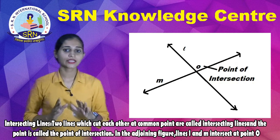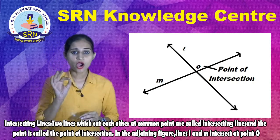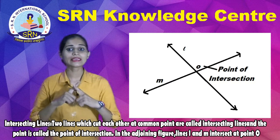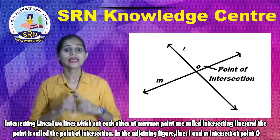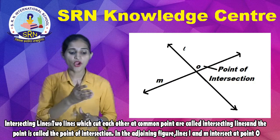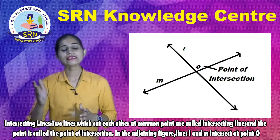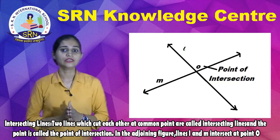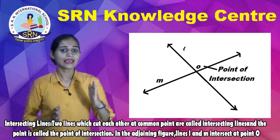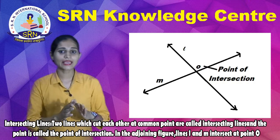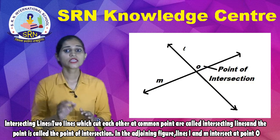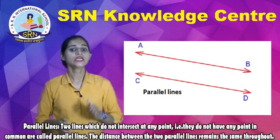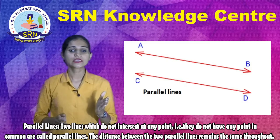Now, Intersecting Lines. Two lines which cut each other at a common point are called intersecting lines, and that point is called the point of intersection. In the given figure, lines L and M intersect at point O.